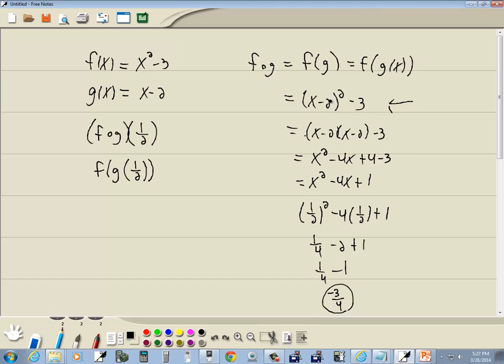Here, you would have got 1 half minus 2, which would give you negative 3 halves. So you'd have 1 half minus 2 squared minus 3.